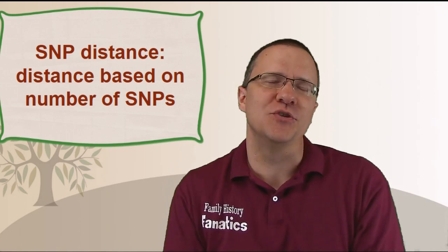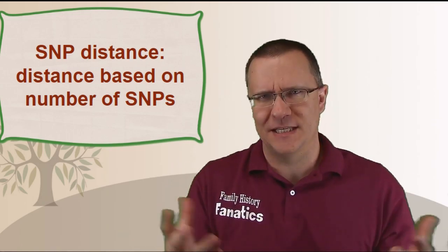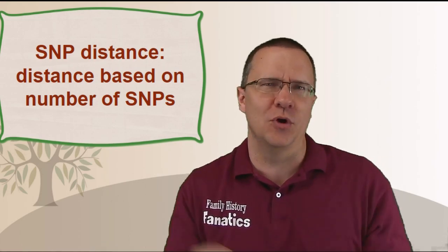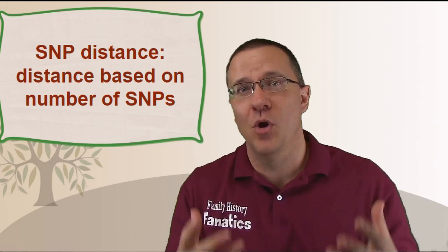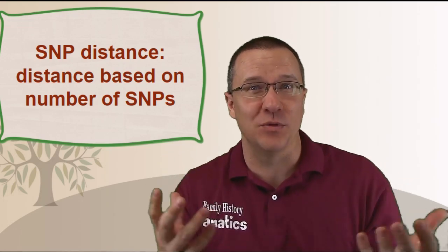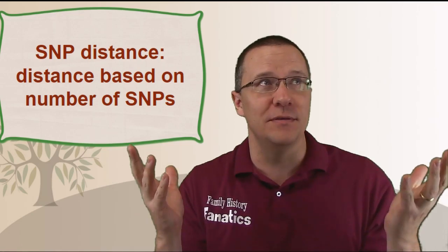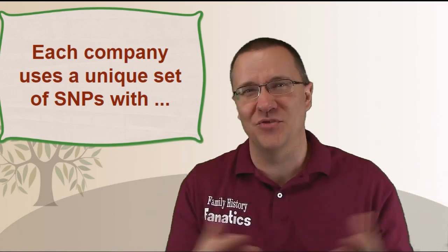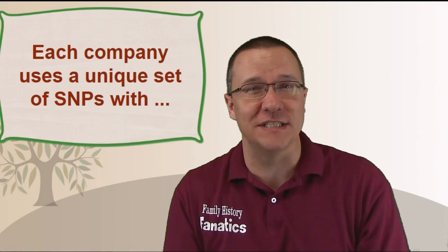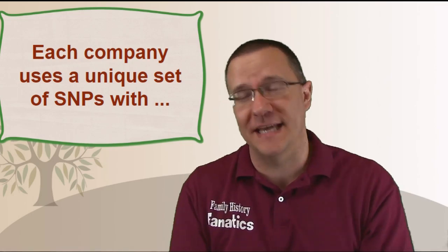Now the third type of measurement is a SNP distance. And what this is is this is the number of SNPs between two different locations. A SNP is a place on the genome where the letter can actually vary. And so that is the place where we actually see variety among all of the people that have tested. Each company uses a unique set of SNPs and they use about 500,000 to 700,000 SNPs that they're testing whenever they test your DNA.